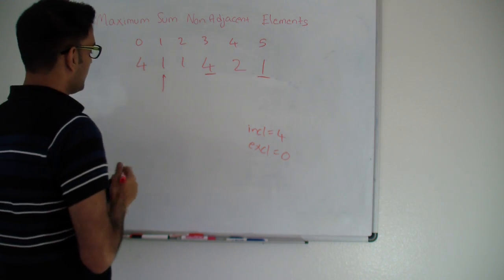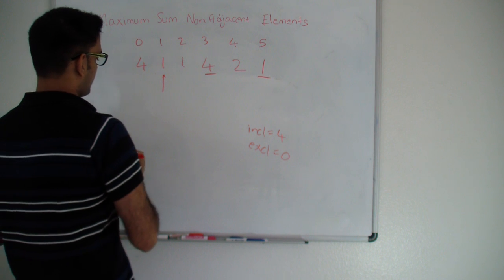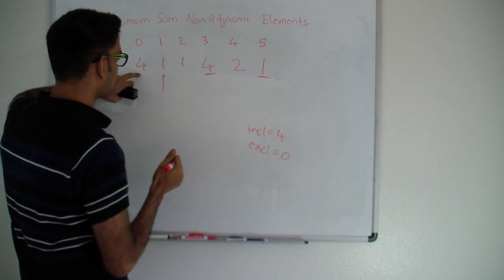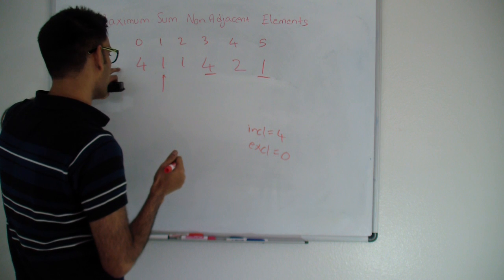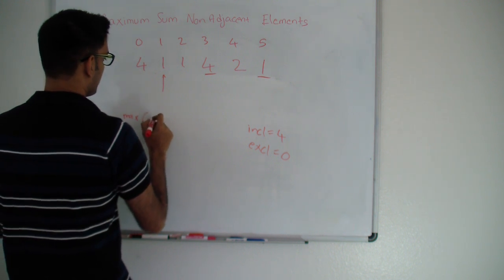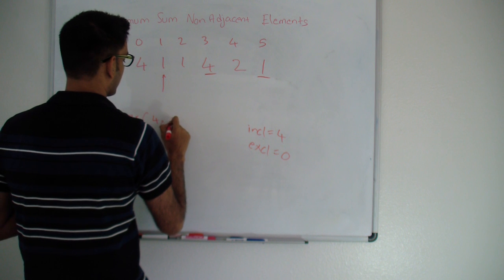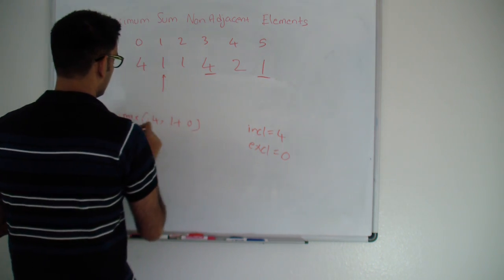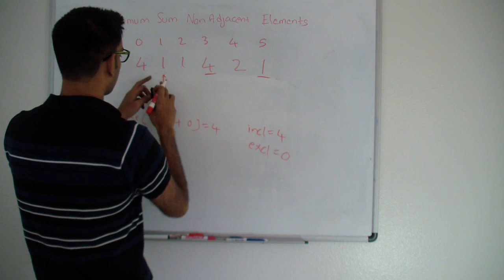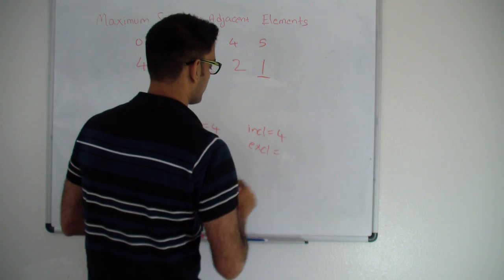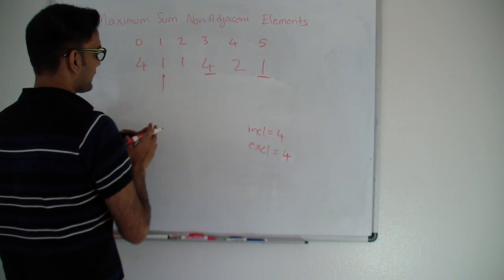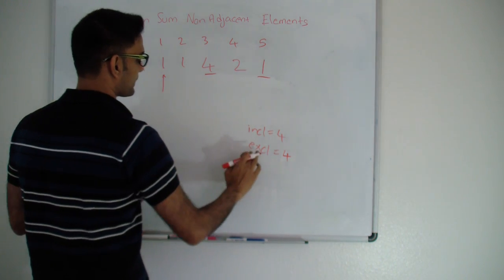Let's move to i equals 1. My new inclusive will be the maximum of either the past inclusive, or the past exclusive plus this current number. My exclusive is 0, and this value is 4, so the new inclusive is max(4, 0+4) which stays 4. My new exclusive becomes the old inclusive, which is also 4. So till this point, including this number the best I can do is 4, and excluding this number the best I can do is also 4.